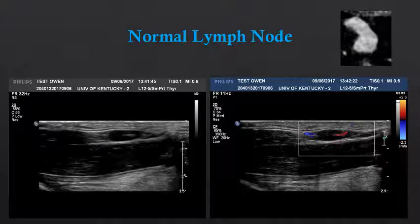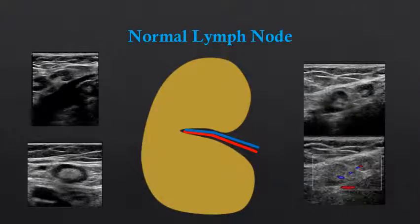Let's take a look at another characteristic lymph node. Again, you see a smooth hypoechoic cortex with a central echogenic fatty hilum, and we can see the hilar blood flow in the area of the echogenic fatty hilum. Here I have provided multiple examples of normal lymph nodes for your reference. We can see these lymph nodes that have smooth hypoechoic cortices and central echogenic fatty hilum.